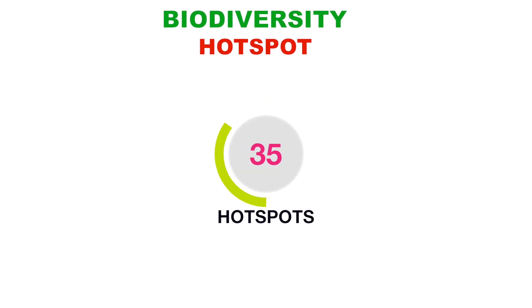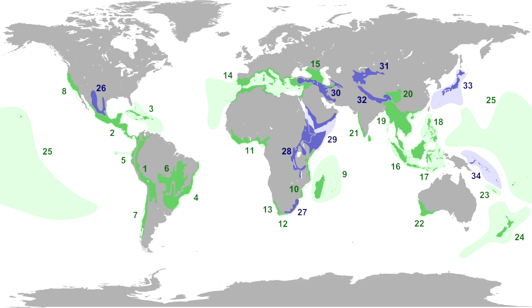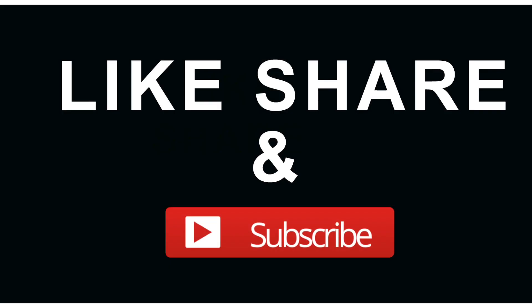At present, there are at least 35 designated hotspots all over the globe, as you can see in this map. The blue ones shown on the map are newly added hotspots. That's all about biodiversity hotspots — I hope you liked the video. If you did, give it a thumbs up and make sure to subscribe to this channel.